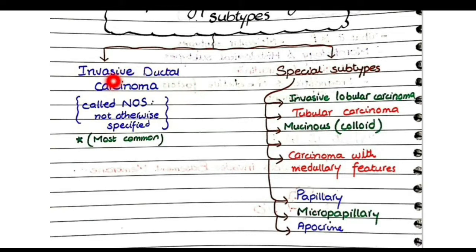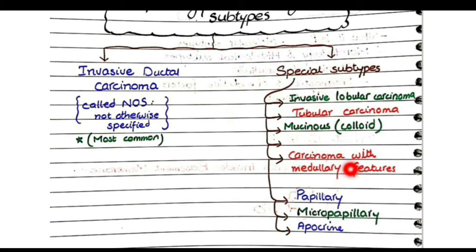Invasive ductal carcinomas are also called NOS — not otherwise specified. This means that these invasive ductal carcinomas lack the special features that are present in the special subtypes. So invasive ductal carcinomas are defined by exclusion in that they lack these special features.